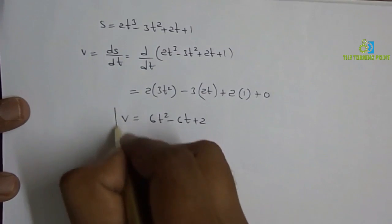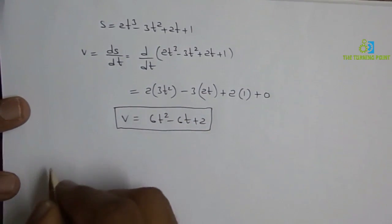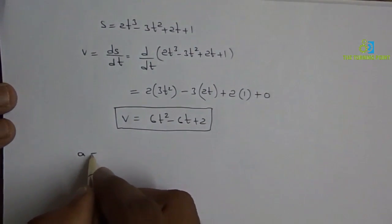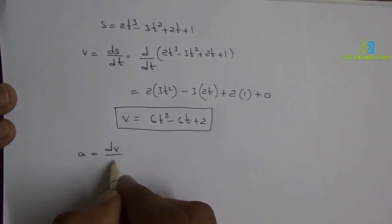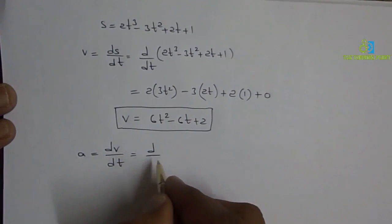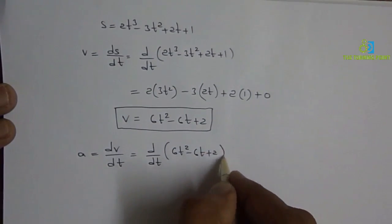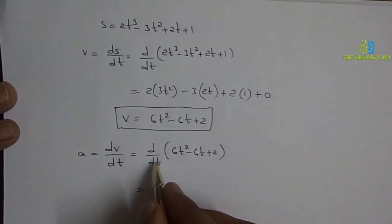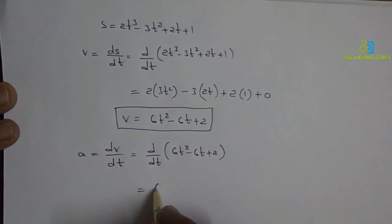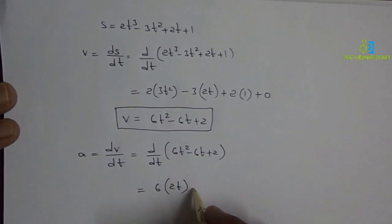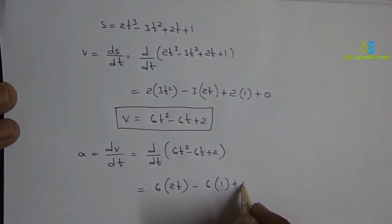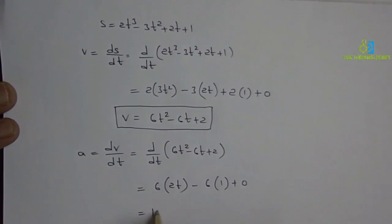Acceleration is nothing but the rate of change of velocity. So d by dt of (6t squared minus 6t plus 2). Differentiating: 6 into differentiation of t squared is 2t, minus differentiation of 6t is 6 into 1, plus constant differentiation is 0. So the acceleration equation is 12t minus 6.